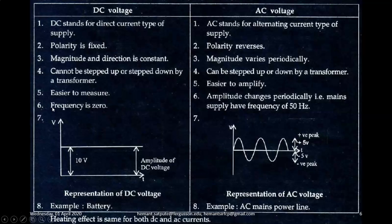For DC voltage, frequency is zero. For AC voltage, amplitude changes periodically. That is, mains supply have a frequency of 50 Hz in India.